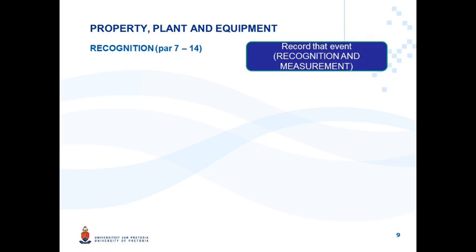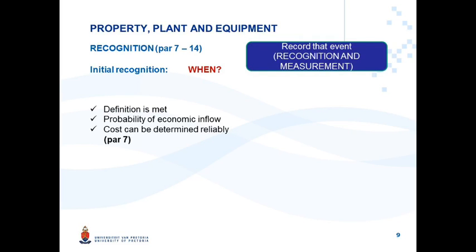Let's summarize the recognition criteria. For initial recognition — when can something be recognized as property, plant and equipment? Firstly, the definition must be met, referring specifically to the definition of property, plant and equipment as per IAS 16 and not only the definition of an asset from the conceptual framework. Together with that, there must be probability of economic inflow, and the cost must be reliably determinable.